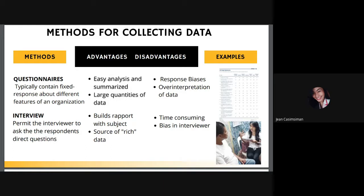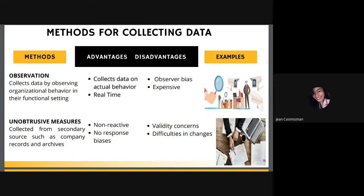Another disadvantage of interviews is bias, where the respondent's answers can be affected by the interviewer's race, class, age, and physical appearance. The third method is observation, which collects data by observing organizational behavior in its functional setting. The OD practitioner may walk through the working area, and tools such as film, videotape, and other methods may be used to record observations. The advantage is collecting data on actual behavior — the observer does not have to ask others, but can simply watch individuals act and speak in real time. The disadvantage is observer bias, where the observer's personal views of right and wrong may interfere, and it can be expensive due to travel and time on site.